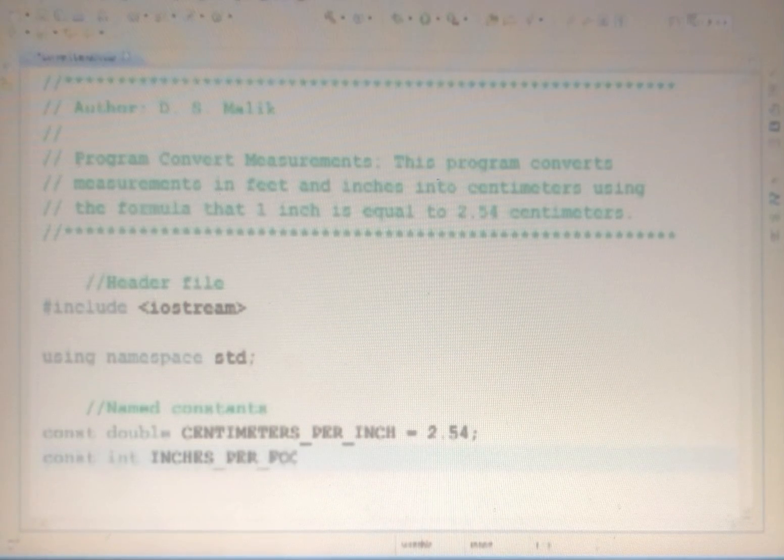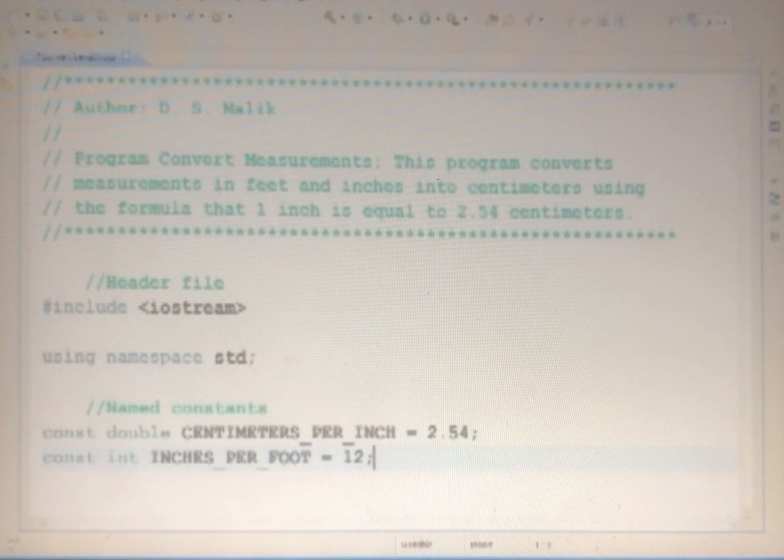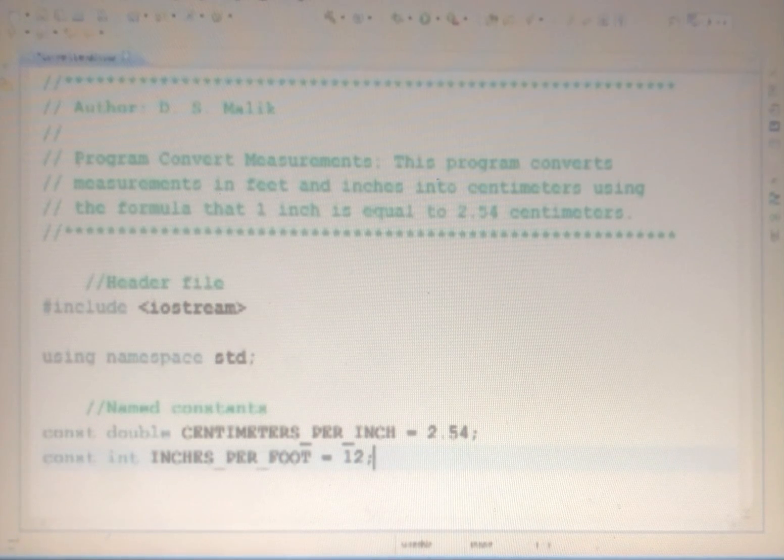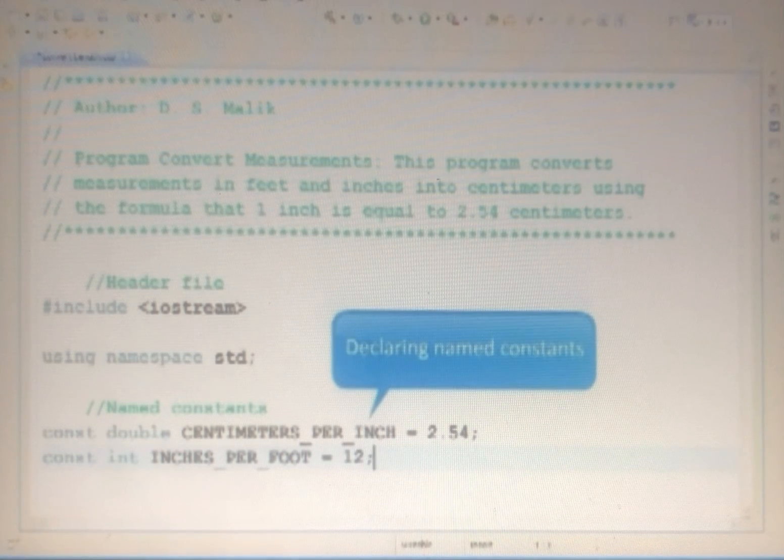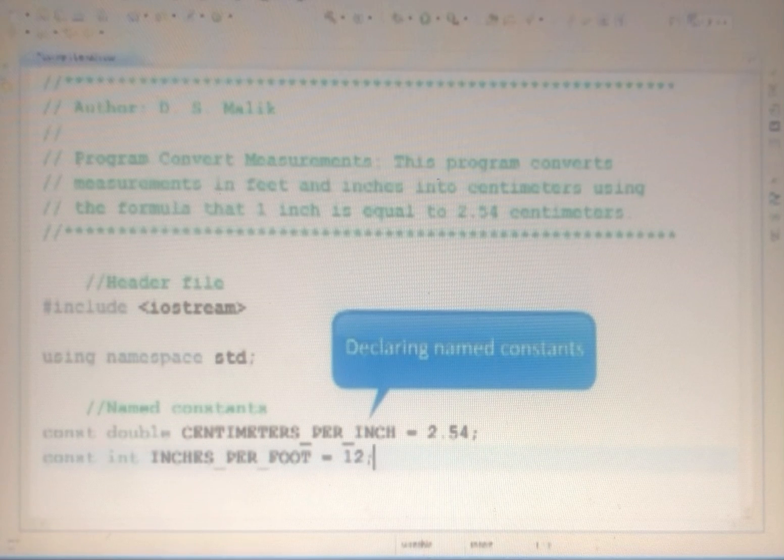Similarly, to find the total inches, you need to multiply the feet by 12 and add the inches. Instead of using 12 directly in the program, you will also declare this value as a named constant. Using a named constant makes it easier to modify the program later.